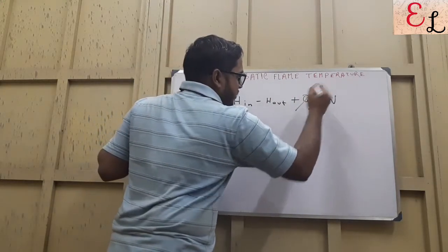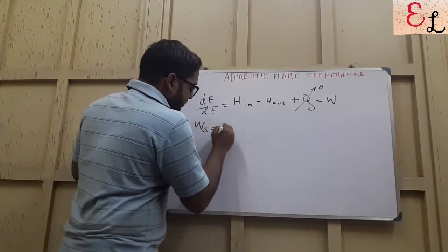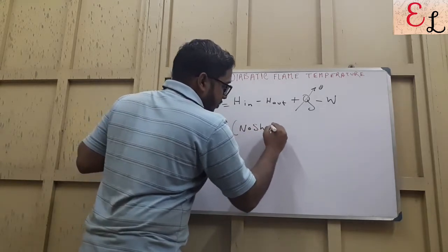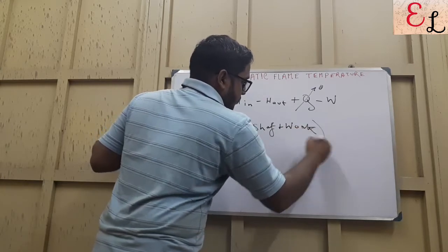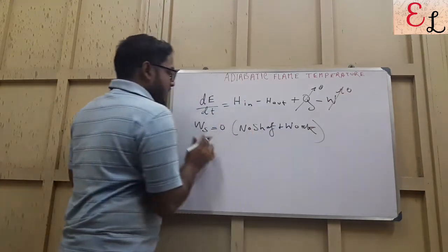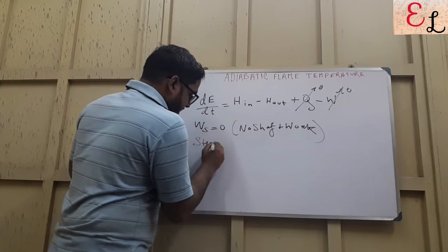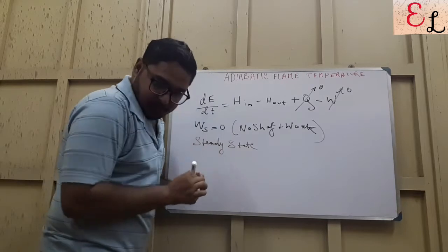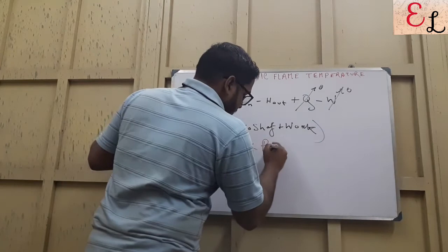So firstly, the assumptions here: W_s is equal to 0, that is no shaft work is being done. And if it is a steady state process — this is the second assumption — it's a steady state process, so dE/dt is again 0.